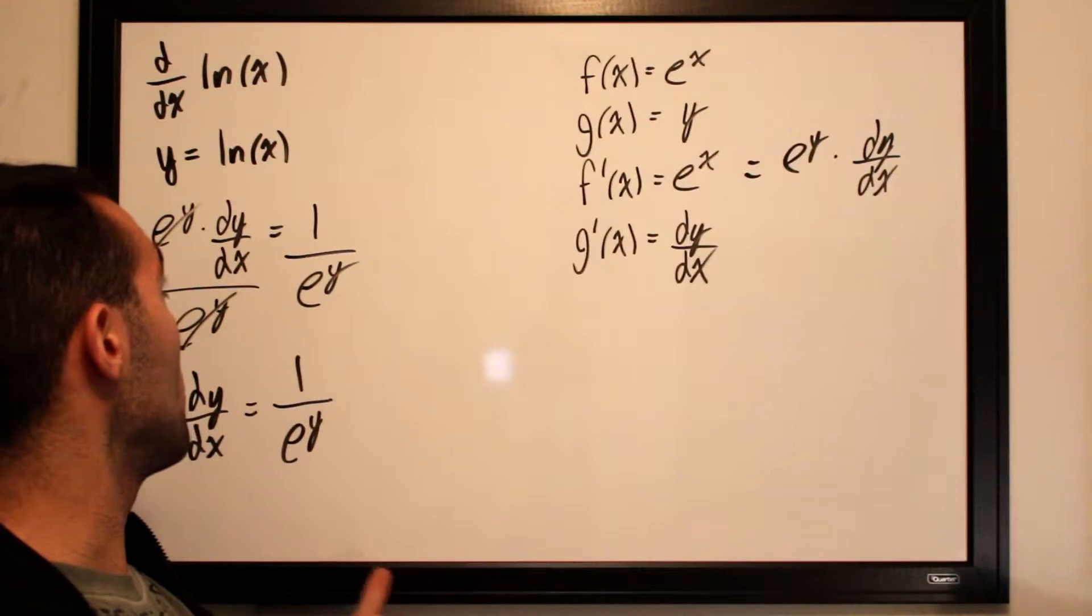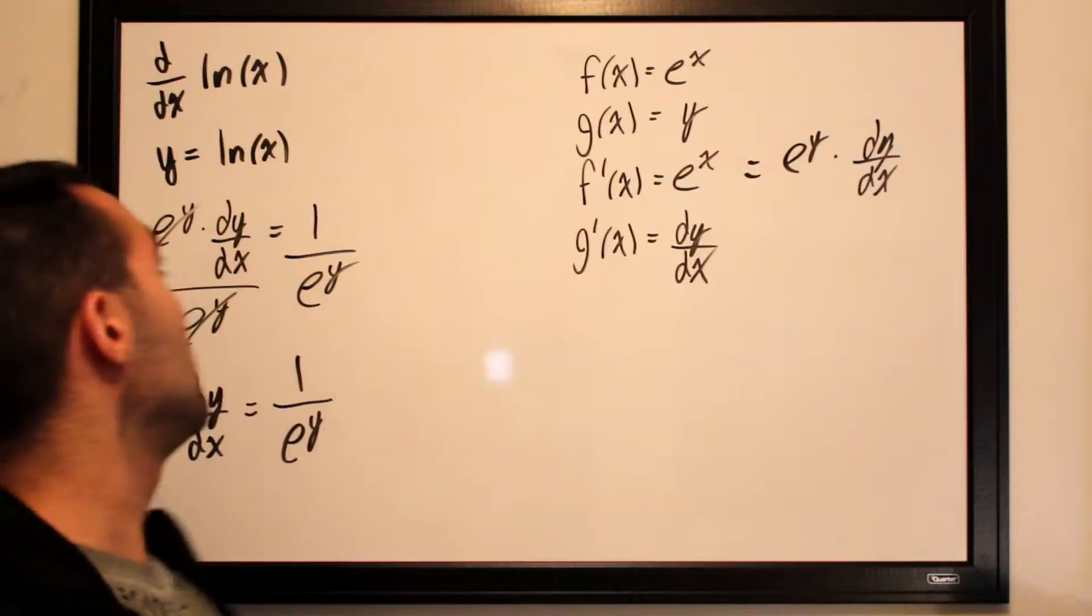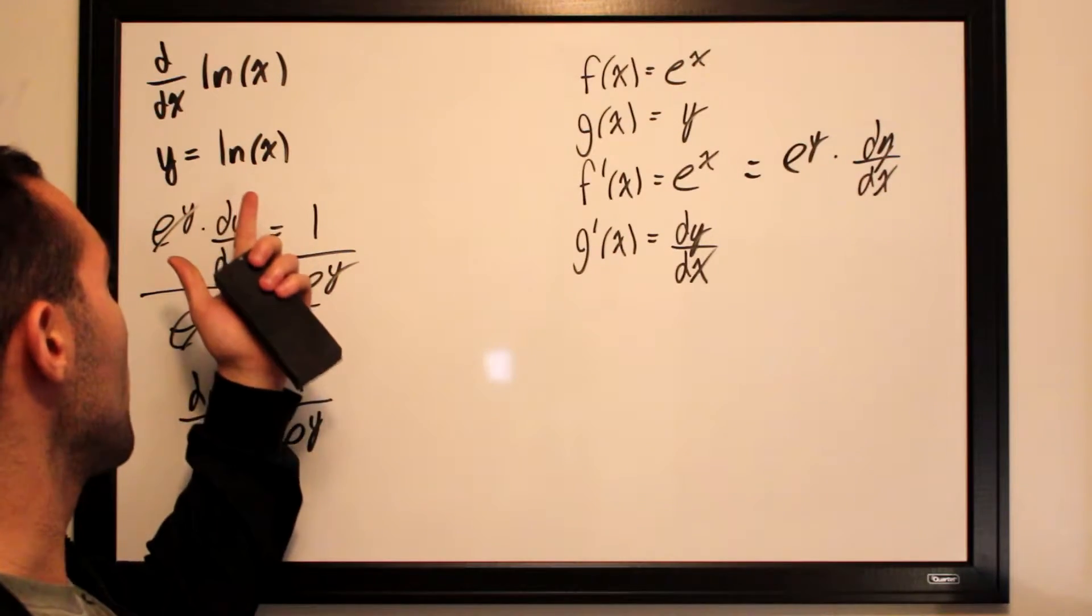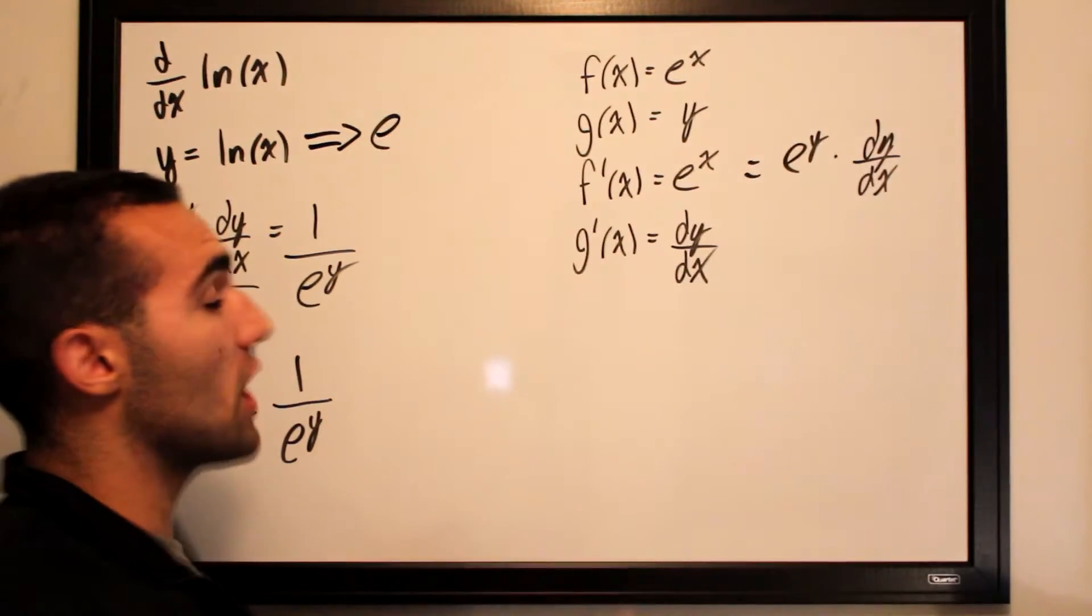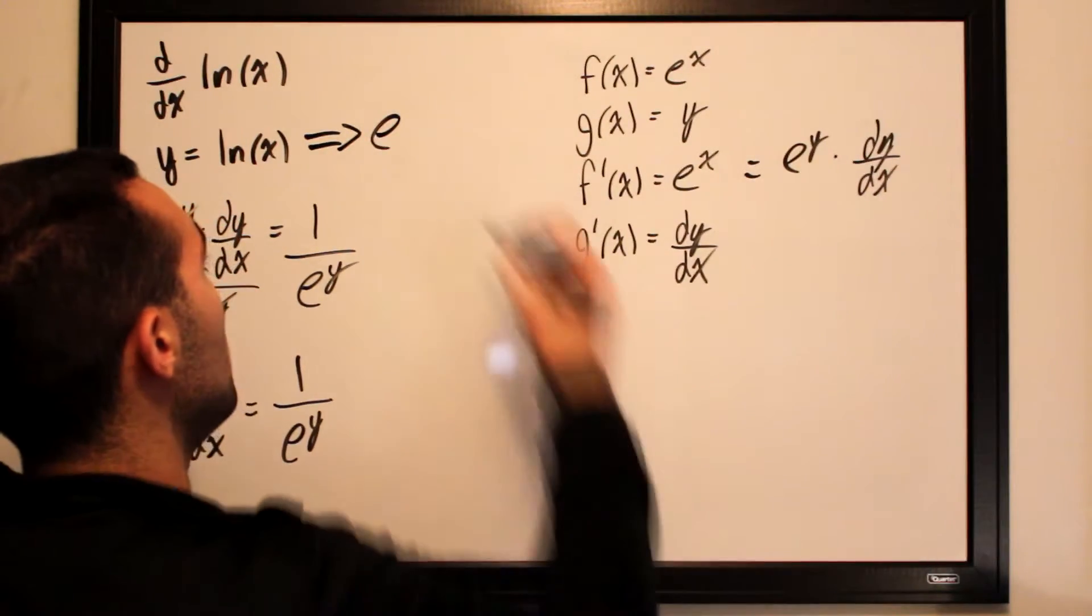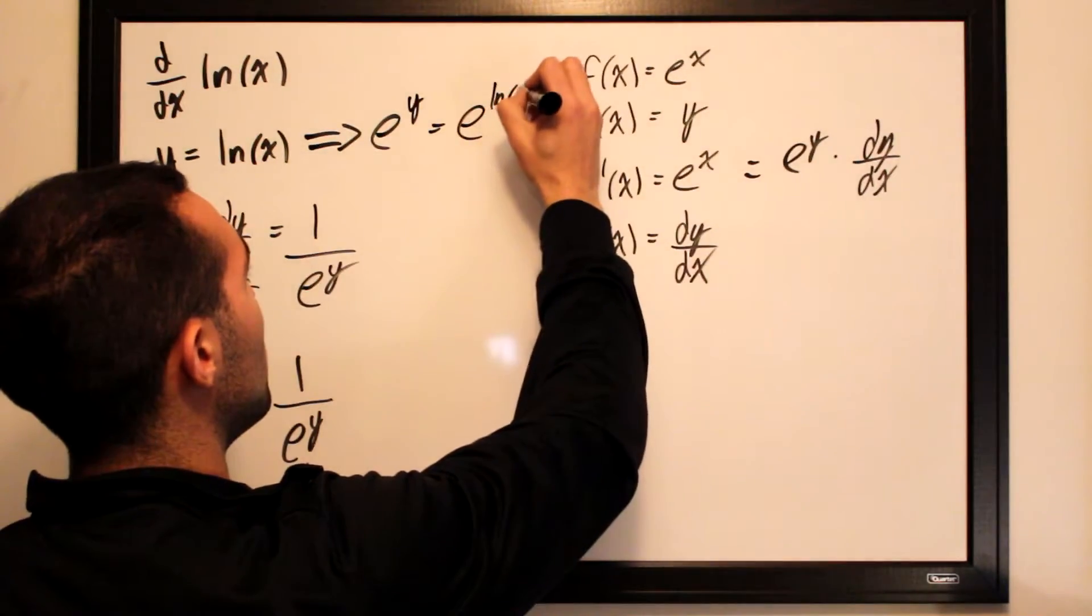Now we want to figure out exactly what e to the y is. Well one of the statements that we had made at the beginning of the video is that y is equal to ln of x. This also means that if we were to exponentiate both sides as we did before at the beginning, e to the y would be e to the ln of x.